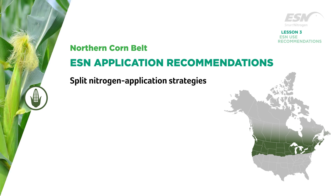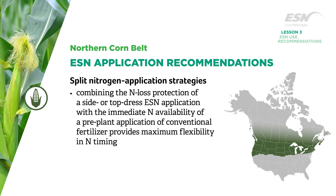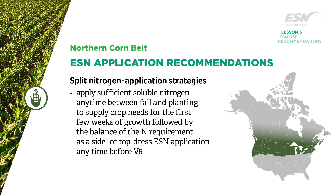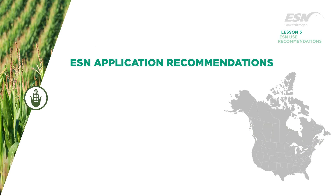For split nitrogen application strategies in northern geographies, combining the N loss protection of a side or top dress ESN application with the immediate N availability of a pre-plant application of conventional fertilizer provides maximum flexibility in N timing. Apply sufficient soluble nitrogen any time between fall and planting to supply crop needs for the first few weeks of growth, followed by the balance of the N requirement as a side or top dress ESN application any time before V6.